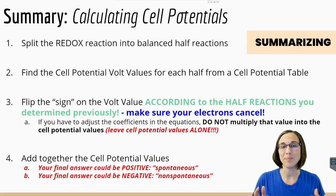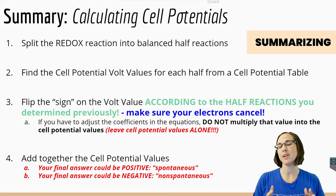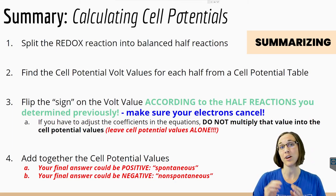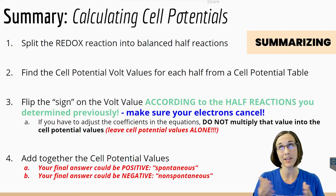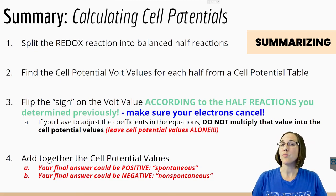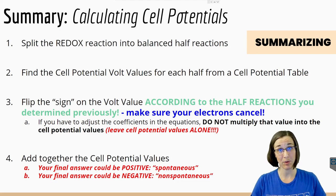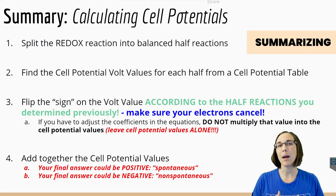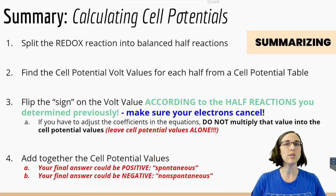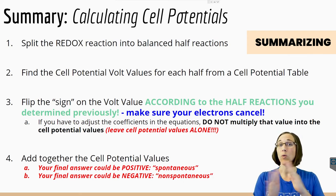In this lesson, we went over how to calculate for cell potentials. Following these steps will help you do so. First, split the redox reaction into balanced half reactions — make sure electrons are on the reactant side for the reduction half, and on the product side for the oxidation half. Second, look up cell potential volt values for each half reaction from a cell potential table online or in your textbook. Third, flip the sign — negative to positive or positive to negative — of the volt value for one of the half reactions as needed to match the half reactions you determined. Do not multiply your volt value by any coefficient used to balance electrons.